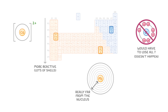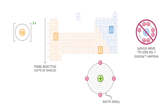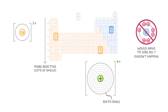Now remember that in any atom, it's the positive nucleus that holds these negative electrons in place. So if the electrons are really far away, like those in the 6th shell, then the nucleus can't hold onto them so strongly. So the atom will lose them more easily and form a positive ion. This is what makes those metals further down the group more reactive — they are just more likely to lose their electrons during a reaction.